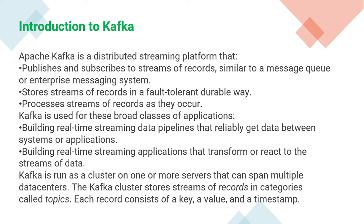Kafka is used for these broad classes of applications: building real-time streaming data pipelines that reliably get data between systems or applications, and building real-time streaming applications that transform or react to the stream of data. Kafka runs as a cluster on one or more servers that can span multiple data centers. The Kafka cluster stores streams of records in categories called topics — topic is very important. Each record consists of a key, a value, and a timestamp.